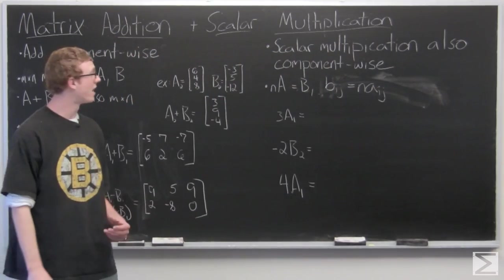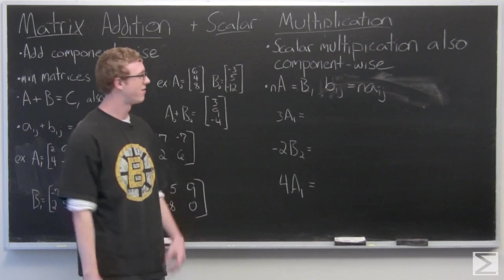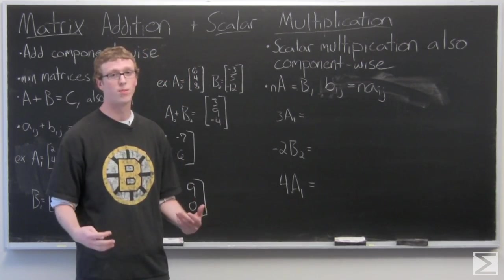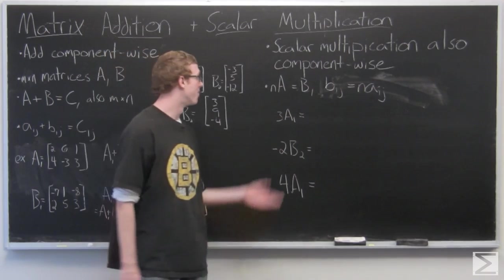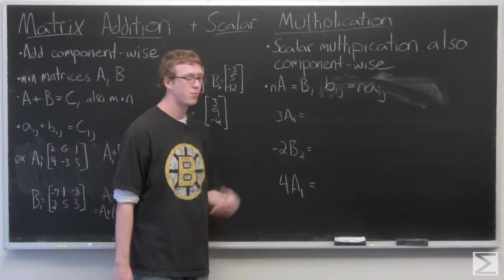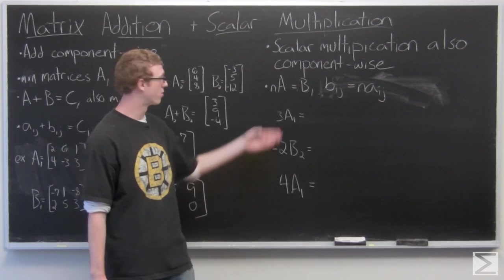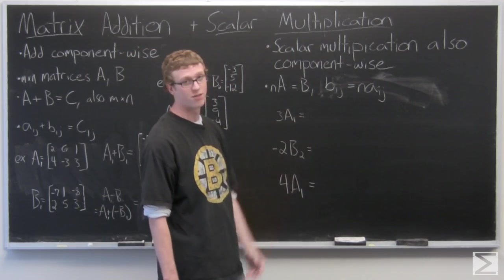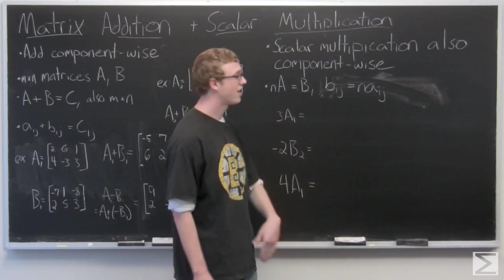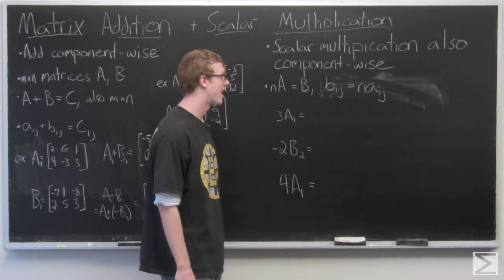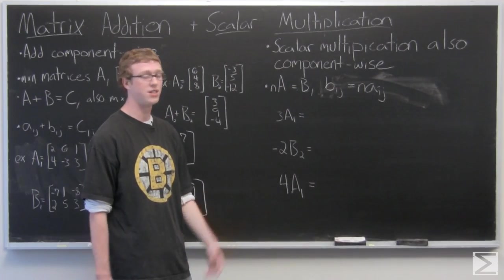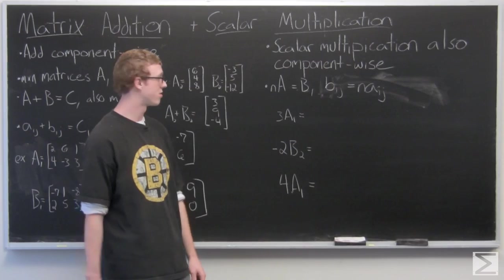So now we're going to take a look at scalar multiplication. Again, very similar to vector scalar multiplication. You do it component-wise. So we have nA, where A is an M by N matrix equals B, which is also an M by N matrix. And the entries of B, Bij, are going to be just n times each entry, Aij.